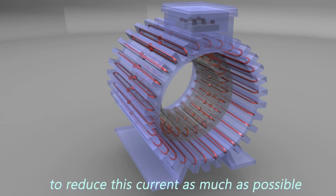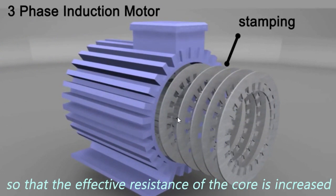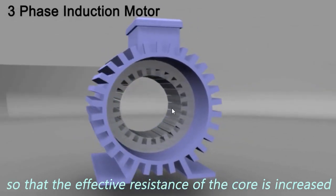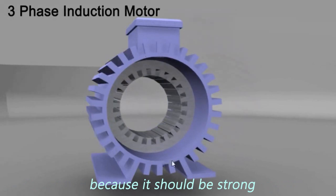To reduce this current as much as possible, the core of induction motor is made in layers, so that the effective resistance of the core is increased. But it is not possible to make the frame in layers because it should be strong.